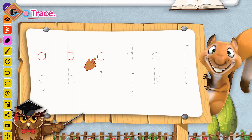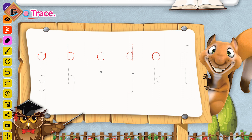Ab hum banayenge D. D mein hum pehle curved line banayenge, waapis jayenge, upar straight line banayenge — yeh ban gaya hamara letter D. Ab hum banayenge E. Is dot pe pencil rakhenge, straight line banayenge, curved line banayenge — yeh ban gaya letter E. Ab hum banayenge letter F. Is dot pe pencil rakhen, curved line then straight line, come down, go back, make a sleeping line — so this is letter F.